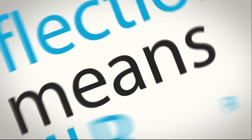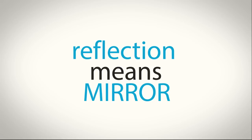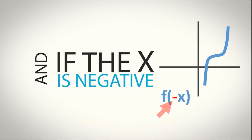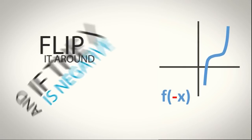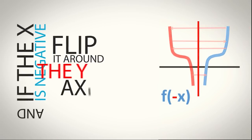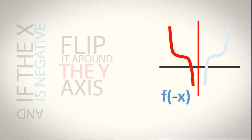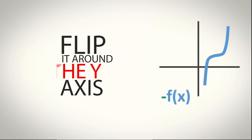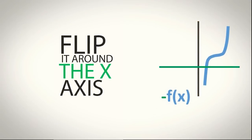Reflection, just as you thought, means to make a mirror image. And if the x is negative then you're gonna flip it round the y-axis. If the whole function is negative, then flip it round the x-axis.